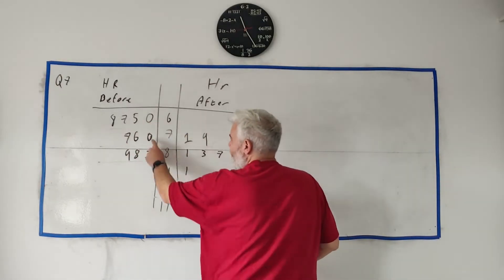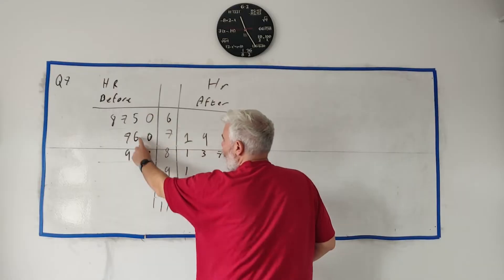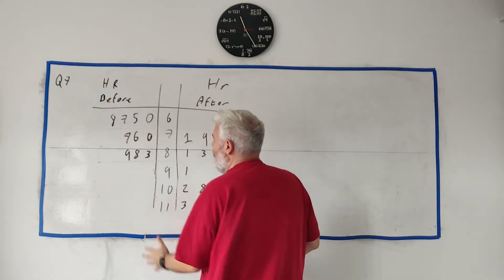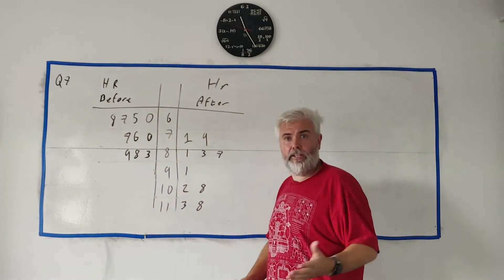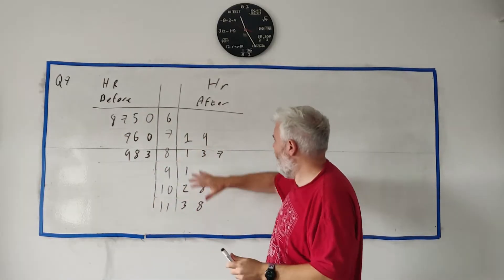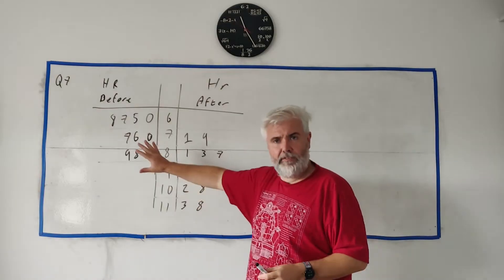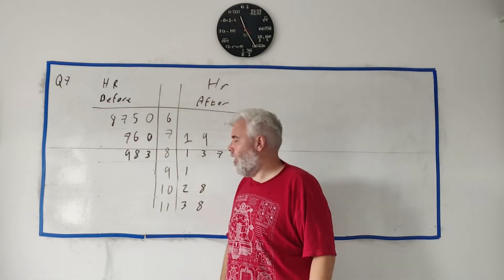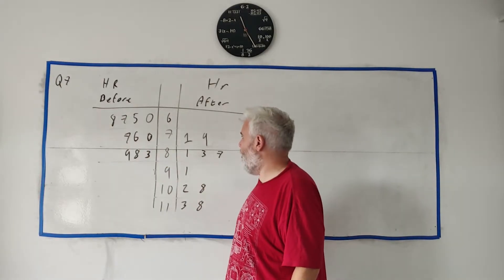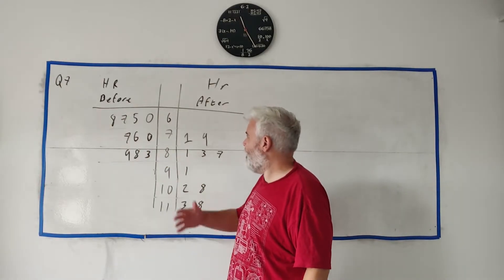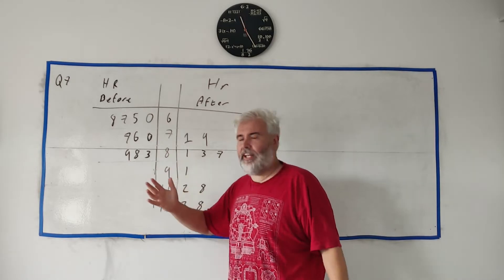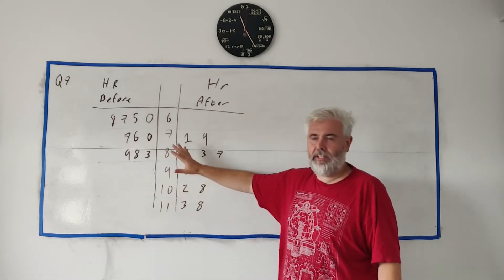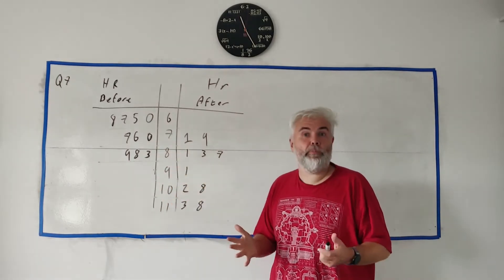Try and keep your numbers in order — it doesn't matter too much, you won't lose marks, but it's usually better to keep them ordered. Also try to keep them aligned, one number on top of each other, because later in this question we're going to use the shape of the diagram to help answer it.